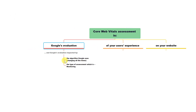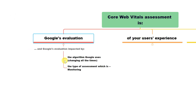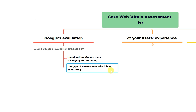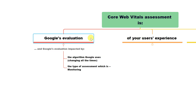The first part is Google's evaluation itself, which consists of the algorithm that is constantly developed and updated. Usually a release happens once a month. And the nature of this evaluation is monitoring — not one-time evaluation, but monitoring. So it's constantly gathering information about everything that happens on your website.